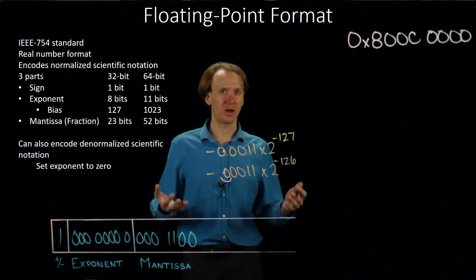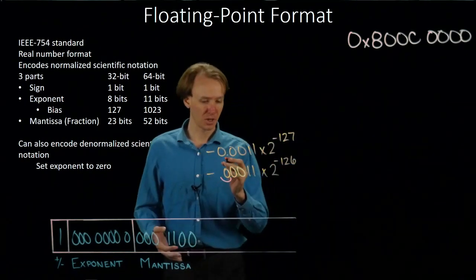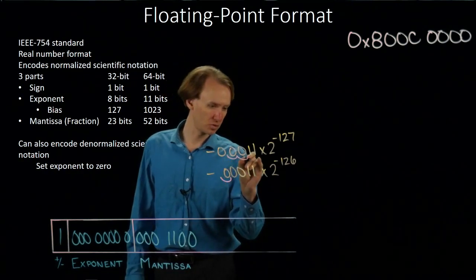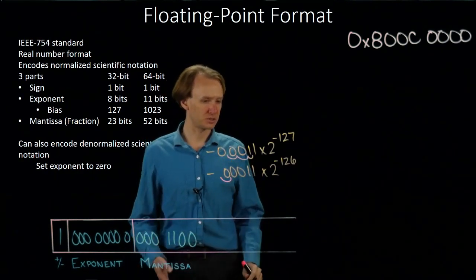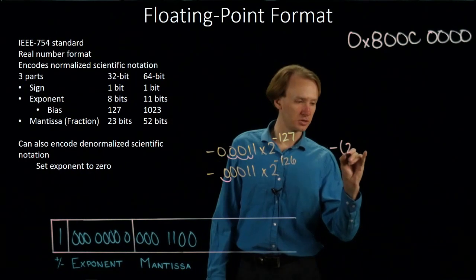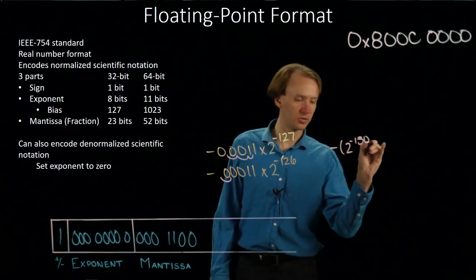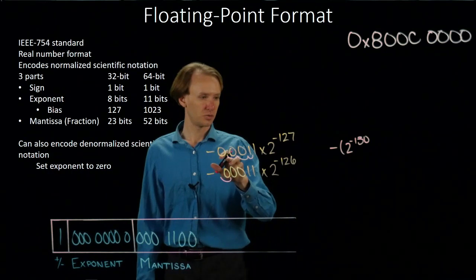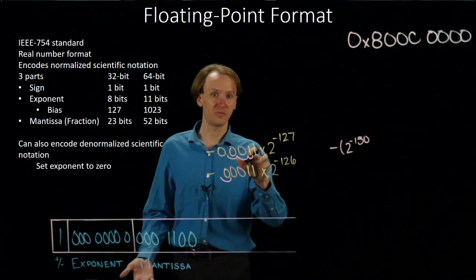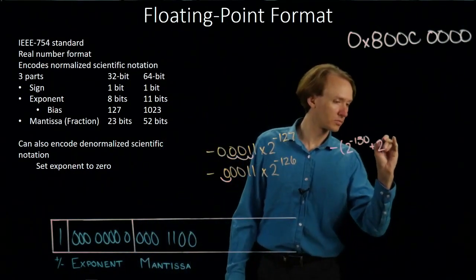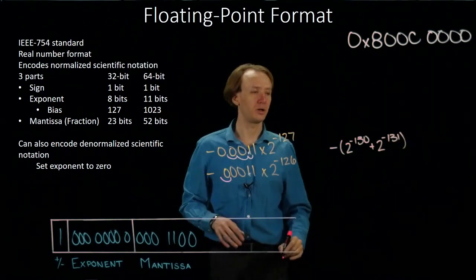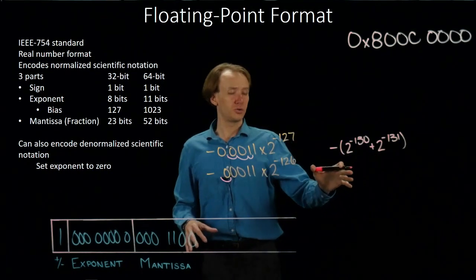So now I have to figure out what this number actually is. I need to move my binary point over three more places to figure out what that first bit is. So that's negative 2 to the minus 130th, 128, 129, 130. I also have a 2 to the minus 131st. That goes same over here as well. This is the value of my number.